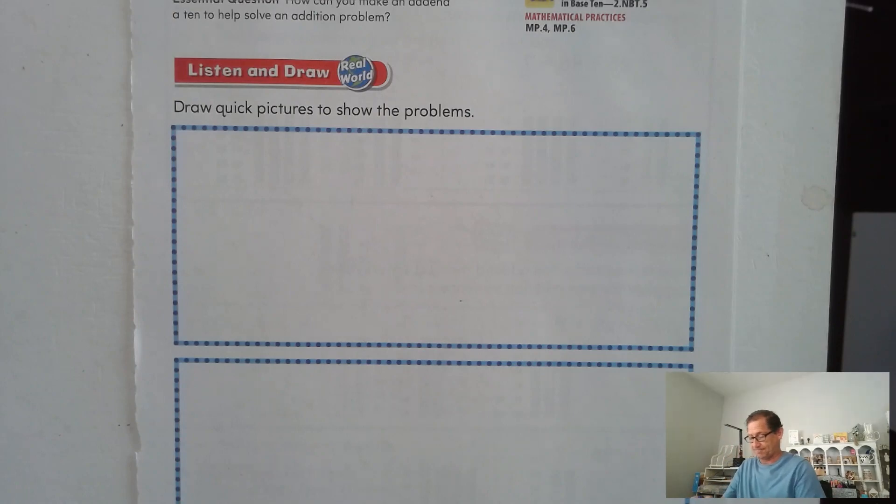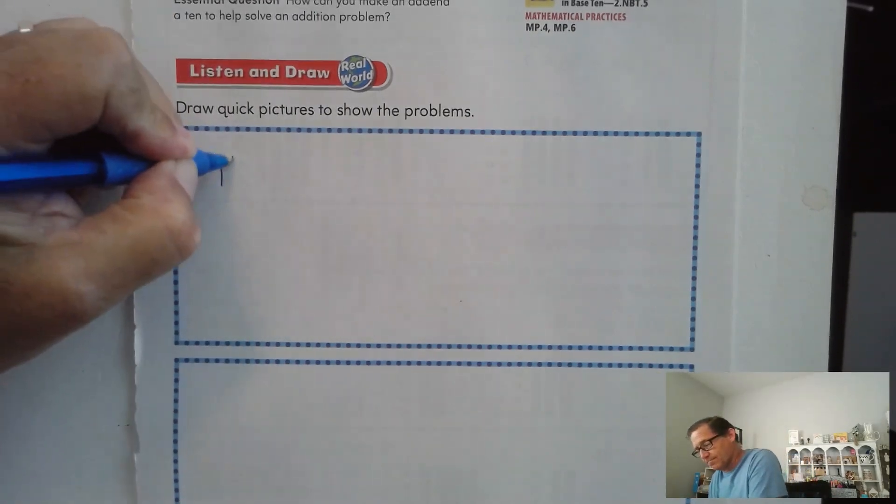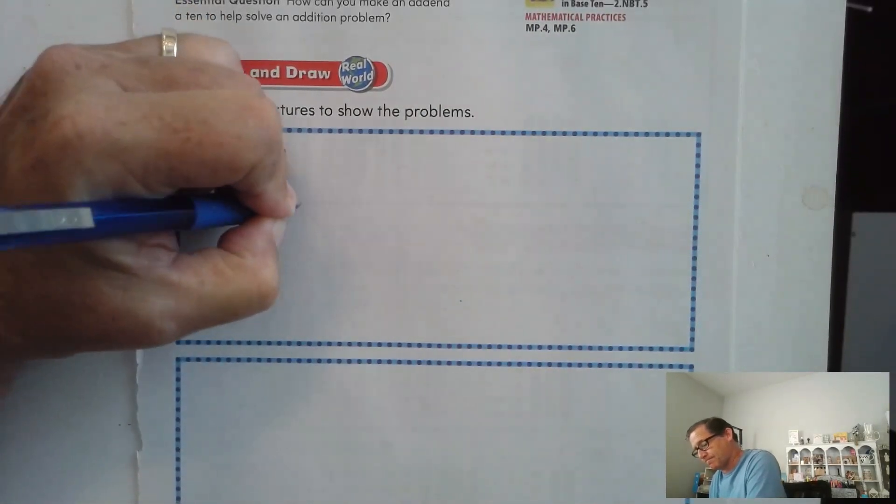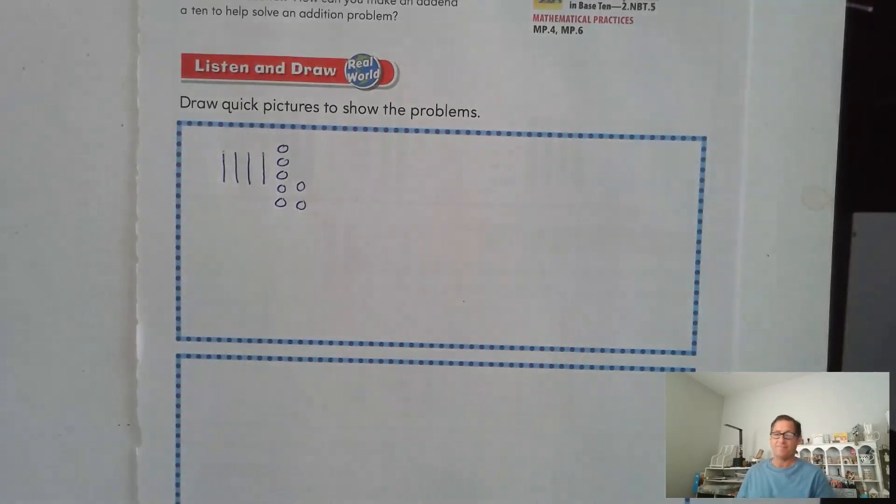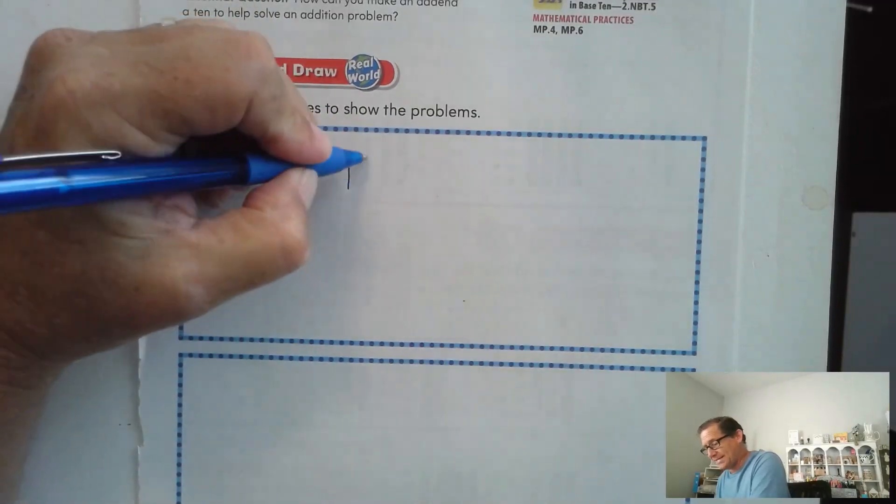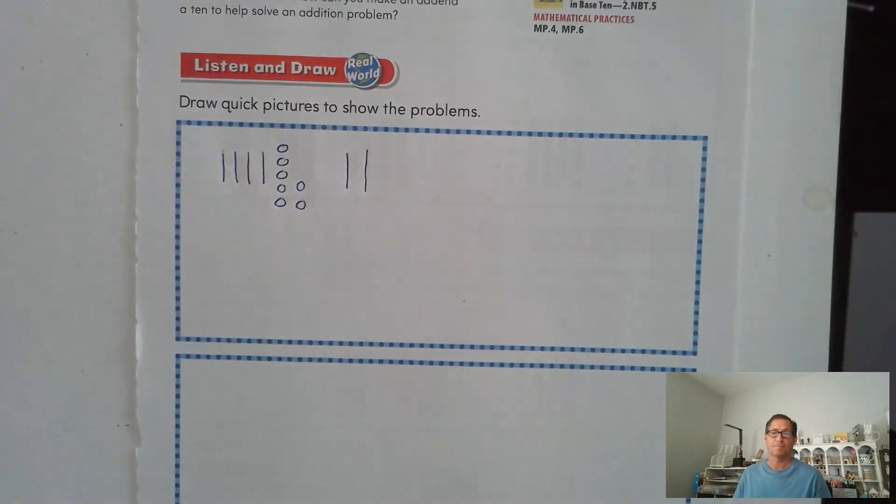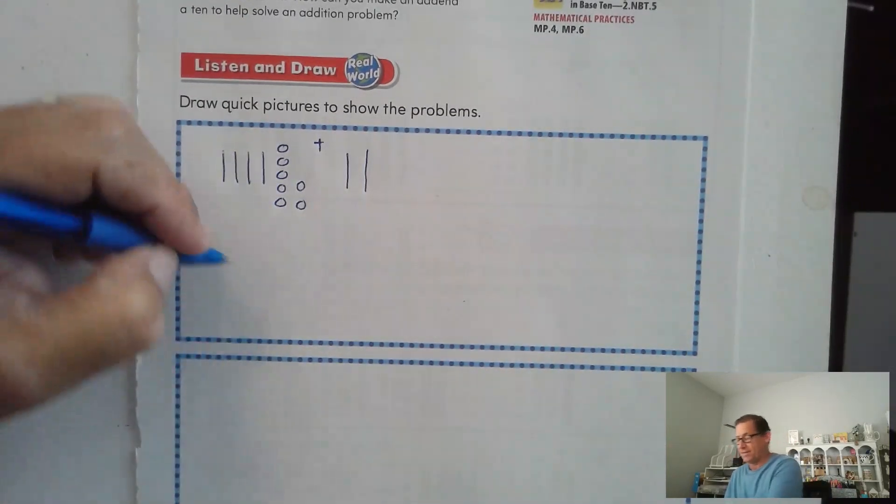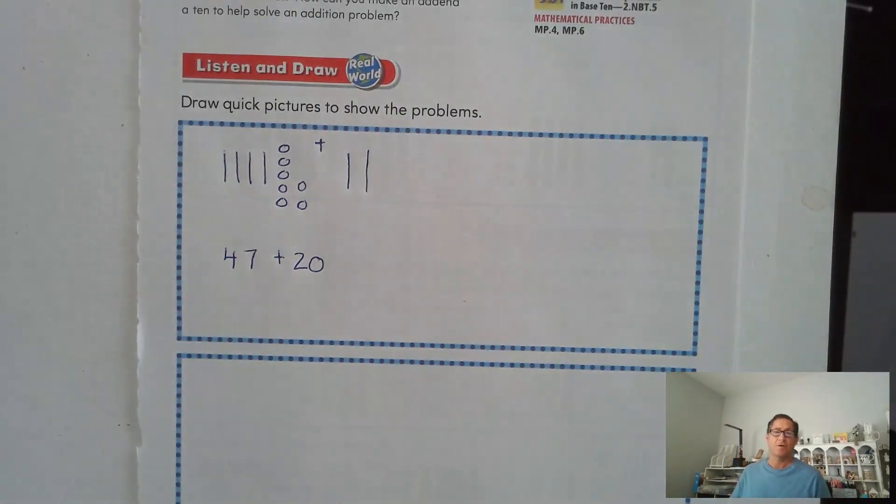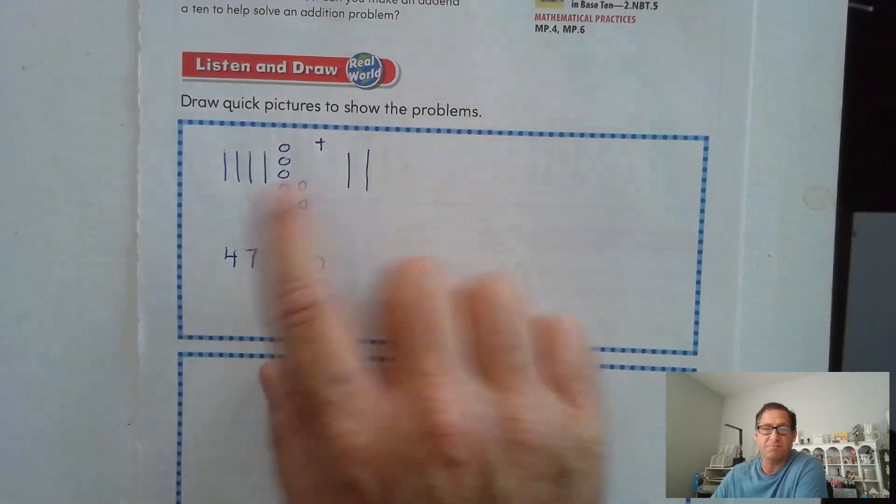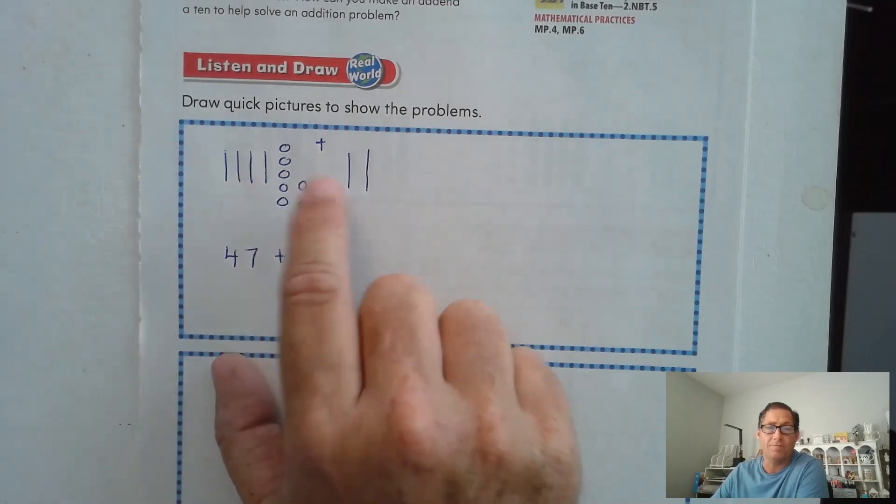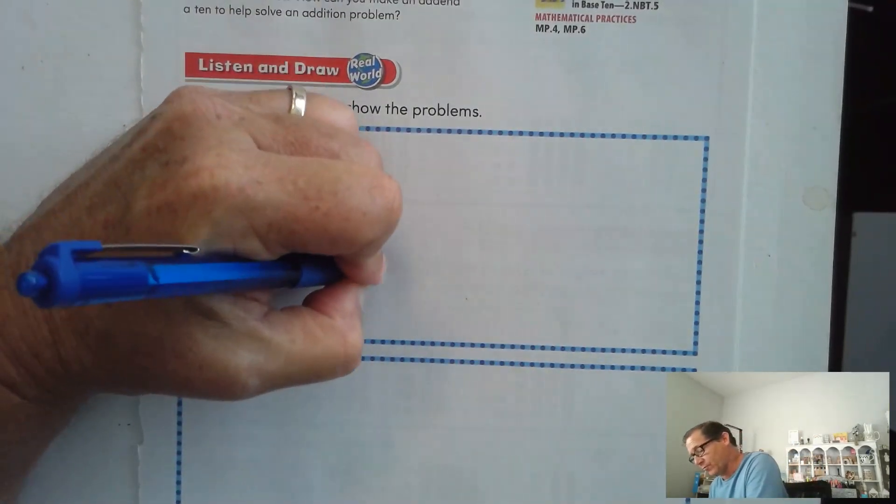Alright, so is this what you came up with? We said she had 47 and she bought 20 more. We're going to add those together, right? So we have 47 plus 20. Well, there aren't any ones in the 20, so we're going to have the same number of ones in our sum. How many 10s do we have? We have four, five, six, right? So we should have come up with 67.